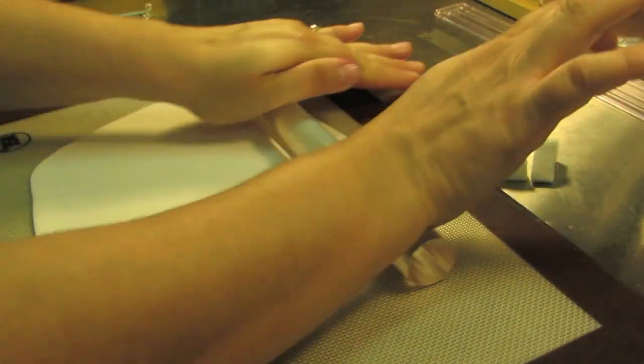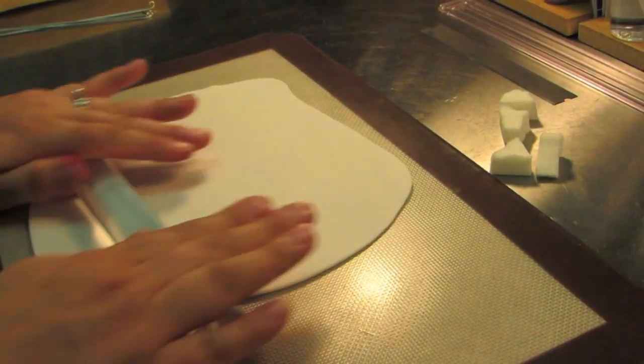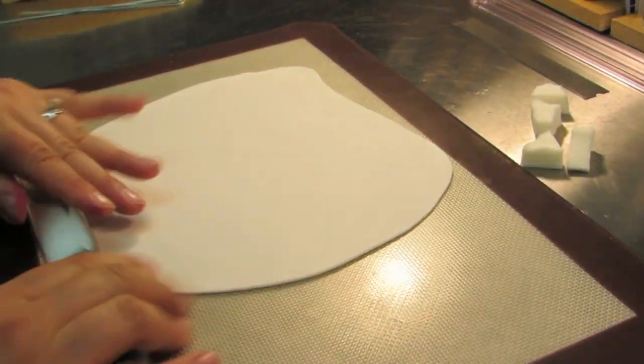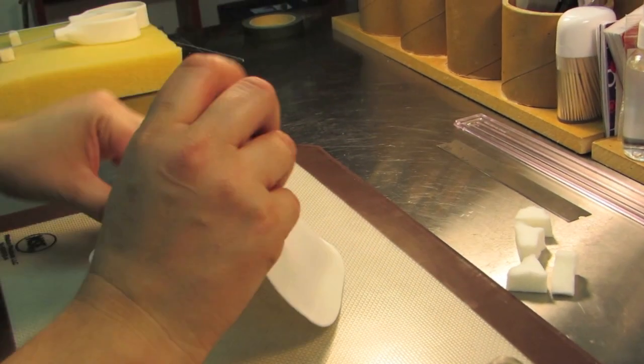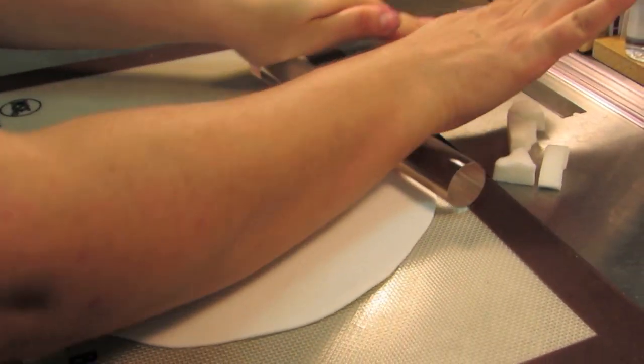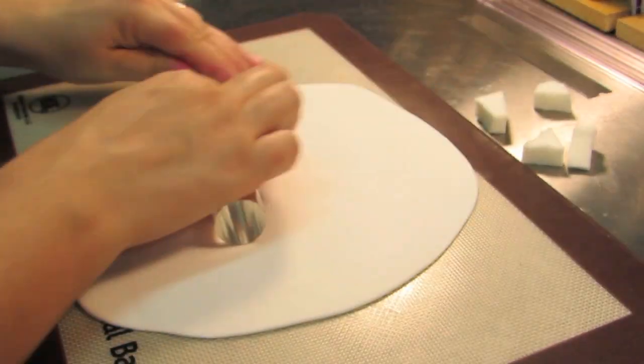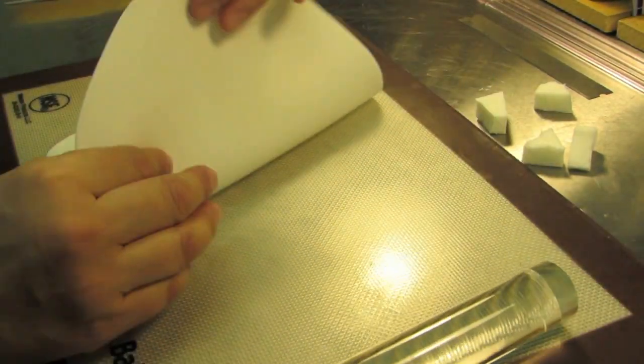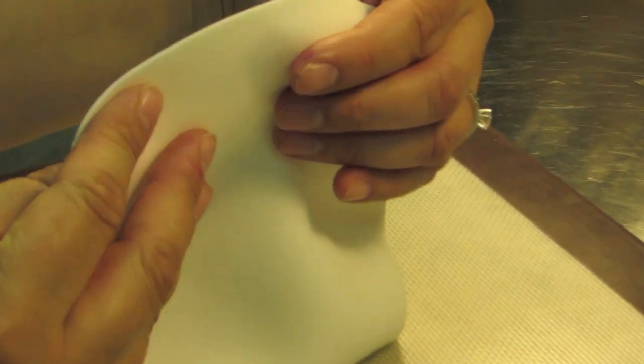You want to roll out your gum paste to about one-eighth of an inch in thickness. You don't want it too thick, but of course you don't want it too thin. So this feels about right to me. I'll show you guys the thickness of the gum paste. You can see there in the video about an eighth of an inch in thickness.